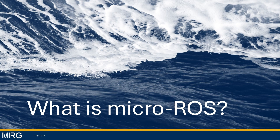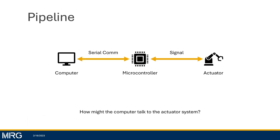What is Micro-ROS? To understand Micro-ROS, first you're going to want to consider the pipeline going from the computer to the microcontroller to your robot's actuator. Oftentimes the computer talks to the microcontroller over serial communication, usually through your USB cable or something like that, and the microcontroller talks to the actuator through a variety of different signals, usually lower level.